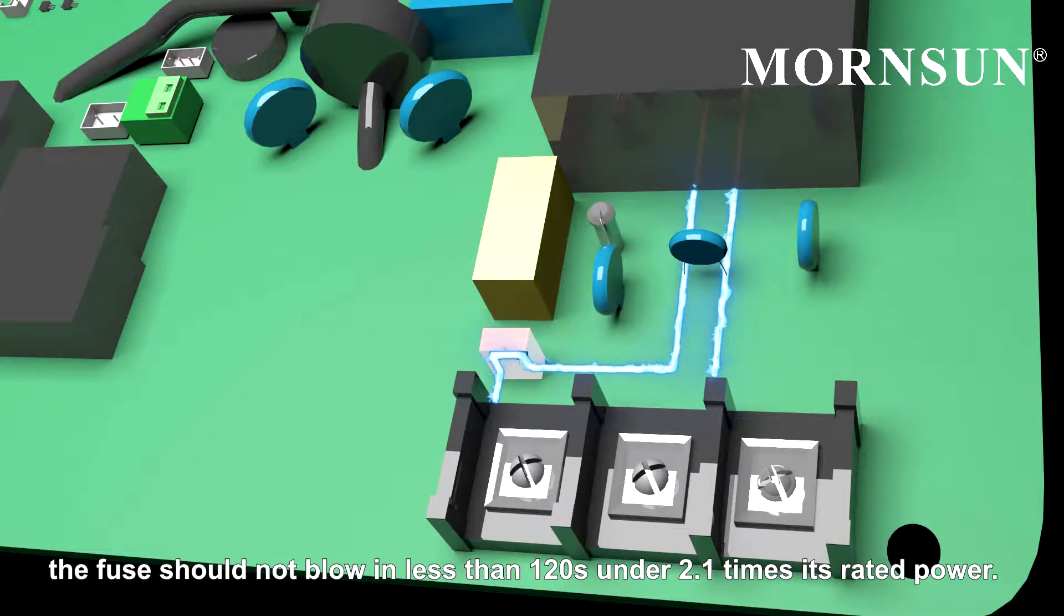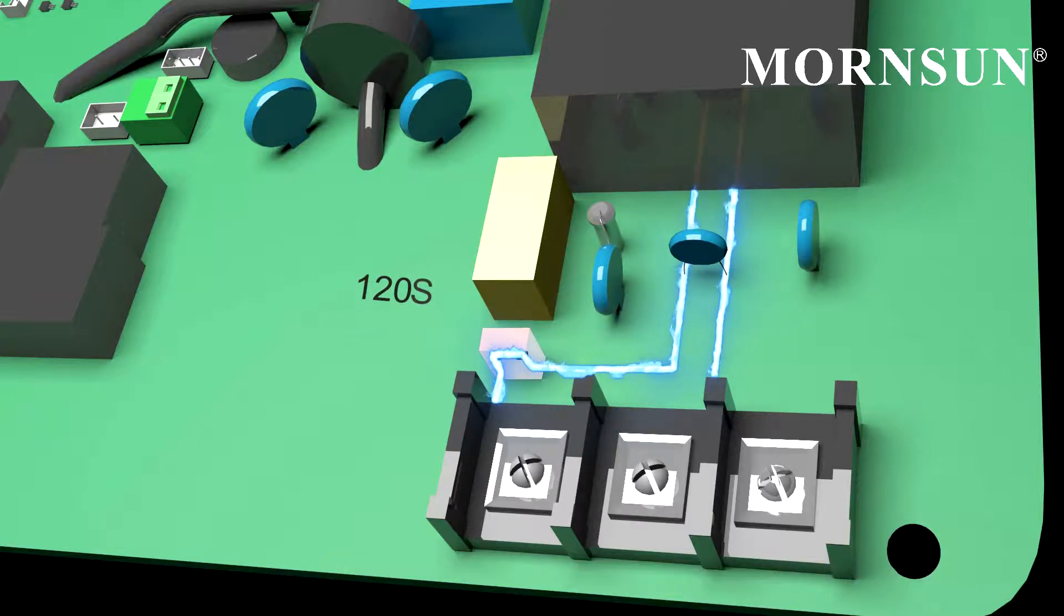For normal system operation, the fuse should not blow in less than 120 seconds under 2.1 times its rated power.